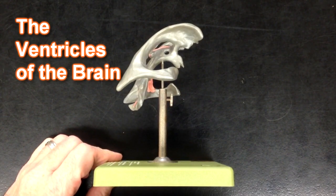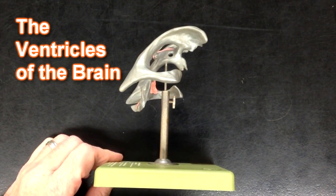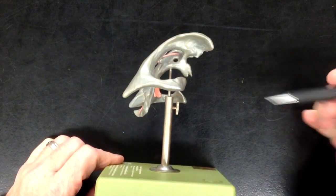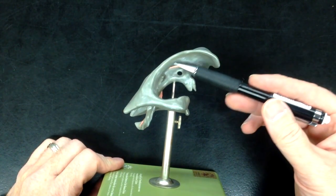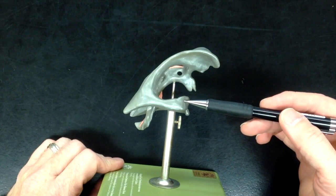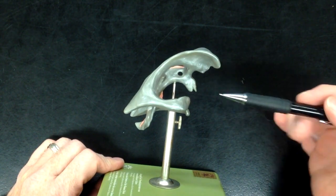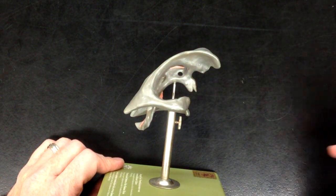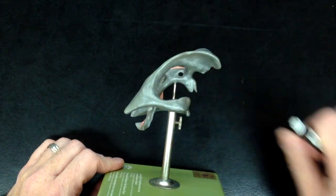This funny looking model right here represents the ventricles of the brain. It's as if someone poured this gray plastic into the ventricles of the brain, let it harden, and then we picked the brain tissue off so that we can see those spaces.